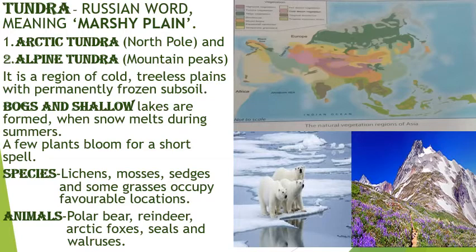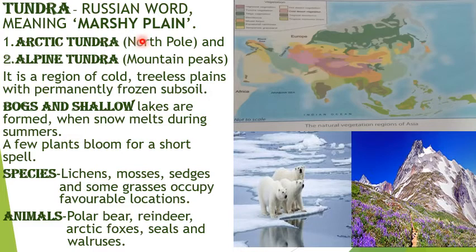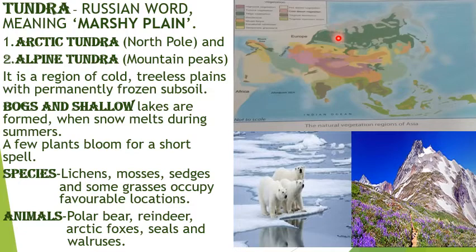Now children, the first region is the Tundra region. The word Tundra is a Russian word meaning marshy plain. Tundra can be divided into two parts: Arctic Tundra, which is found around the north pole, and Alpine Tundra, which is found on the mountain peaks. Arctic Tundra is found north of the Arctic Circle. It is a region of cold, treeless plains with permanently frozen subsoil.